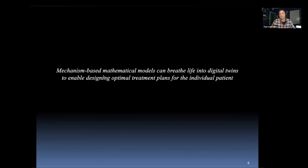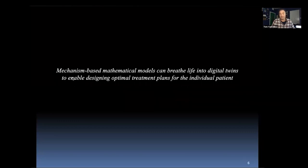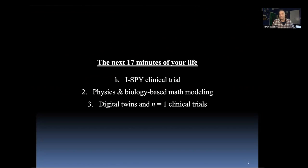Our approach is to build what we call mechanism-based mathematical models to breathe life into digital twins, enabling us to design optimal treatment plans for the individual patient. This is different from the big data artificial intelligence approach, where you try to learn about the individual from a very large population. Our approach calibrates mathematical models using individual patient data — which is possible when models are based on underlying mechanisms. This sets the stage for building digital twins and working toward an N-equals-one clinical trial, where the one is the individual patient.